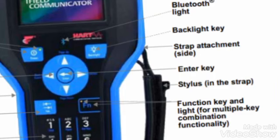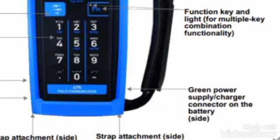Here you can see a Bluetooth light, a backlight key button, and a strap-attached side, along with the enter key and the function key.